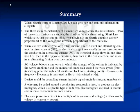There are two distinct types of electrical current: direct current and alternating current. In direct current, an electrical charge flows steadily in one direction over the conductor. In alternating current, the electrical charge flows in one direction first, then in the opposite direction, then back in the first direction, and so on, in an alternating fashion over the conductor.